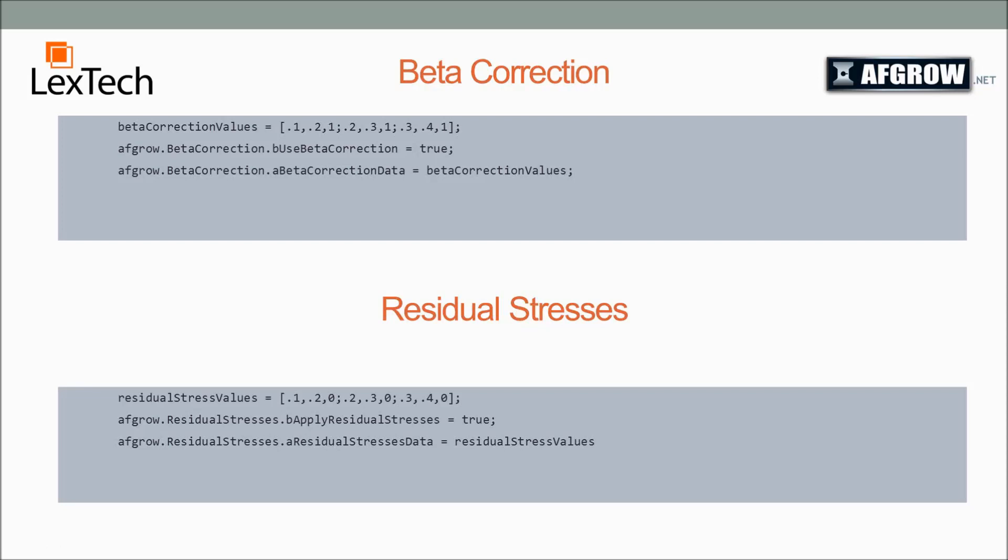These are two examples of the beta correction and residual stresses implemented in MATLAB. First, what you need to do is declare your array like we showed in the last slide. Next, you need to declare the bUsedBetaCorrection or bApplyResidualStresses equals true. This needs to be done before you assign the array of data. Otherwise, it will throw an error. Next, you set aBetaCorrectionData or aResidualStressData equal to the array that you defined earlier. And after that, you should be able to proceed with your prediction and they should be applied.